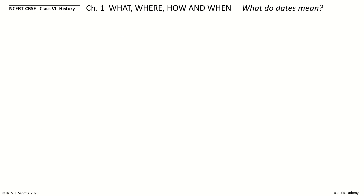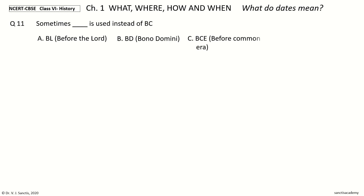Question 11. Sometimes dash is used instead of BC. Your options: BL (Before the Lord), BD (Bono Domini), BCE (Before Common Era), BD (Before Dawn). And the answer is BCE — Before Common Era.